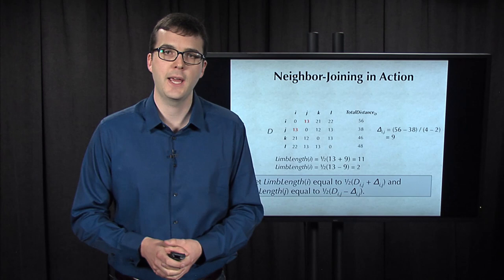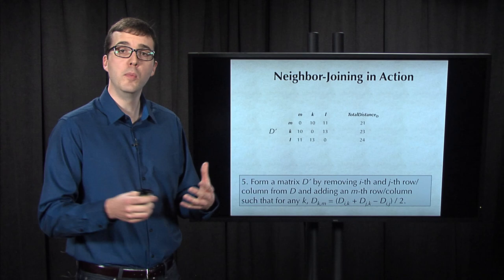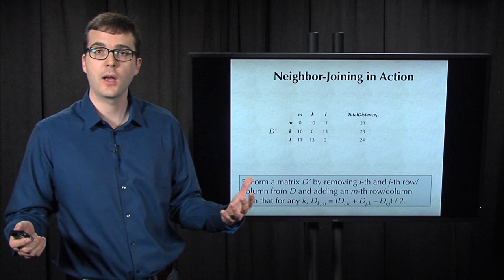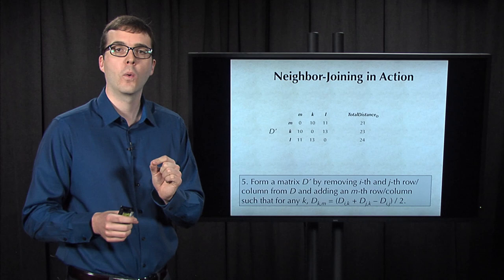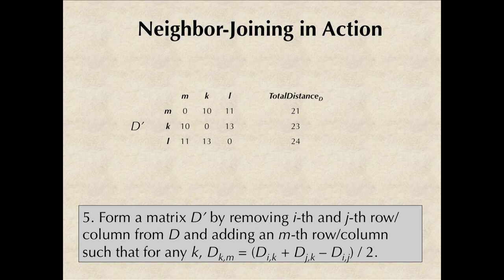Now that we have these limb lengths, we can remove the ith row and jth row, as well as the ith column and jth column from D, and then add a row that corresponds to the parent node of I and J, or M, and we denote this smaller matrix as D'. For each other leaf K, we compute the distance between K and this parent node M as the distance from I to K plus the distance from J to K minus the distance from I to J, all divided by 2.